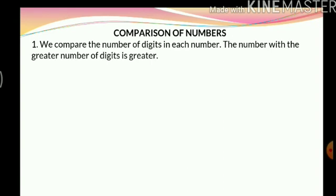Now if you remember, we have done comparison of numbers multiple times in the previous classes to compare which one is greater and which one is smaller. So let's start with the rules of how we compare numbers. Rule number 1: we compare the number of digits in each number. The number with the greater number of digits is greater. So if one number has 5 digits and the other has 6 digits, the 6-digit number is obviously greater than the 5-digit number.